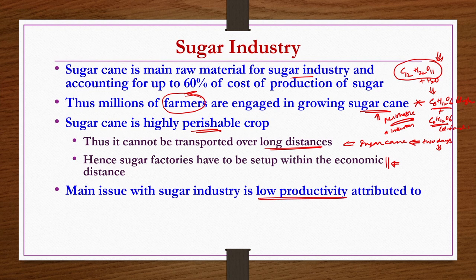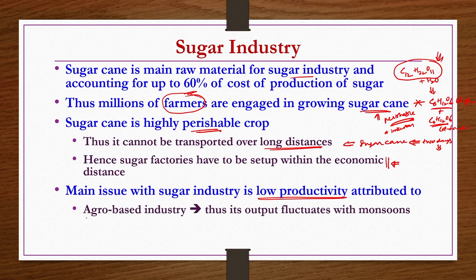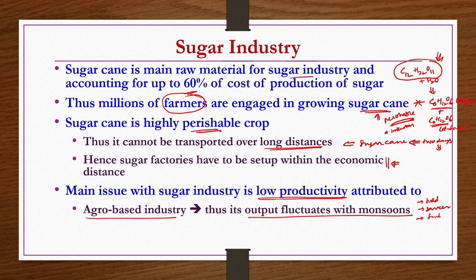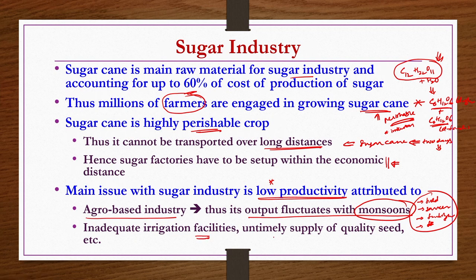Low productivity exists because this is an agro-based industry whose output fluctuates with monsoons, farmers, and field conditions. Factors such as sources of water, fertilizers, and irrigation all have effects on production. Inadequate irrigation facilities and untimely supply of quality seed also lead to low productivity in sugar industries.